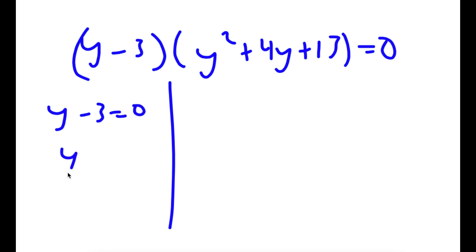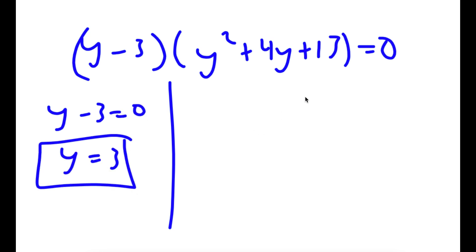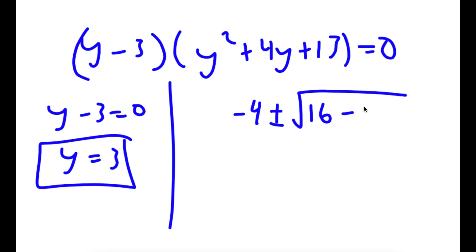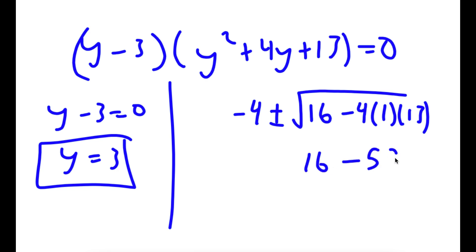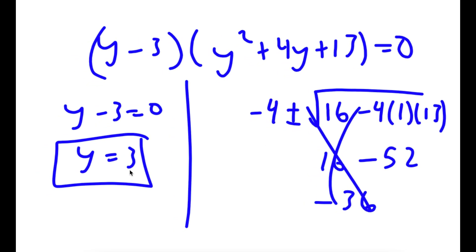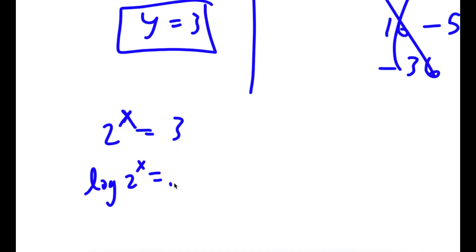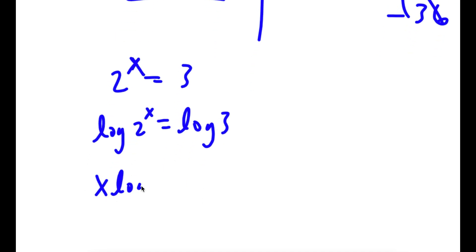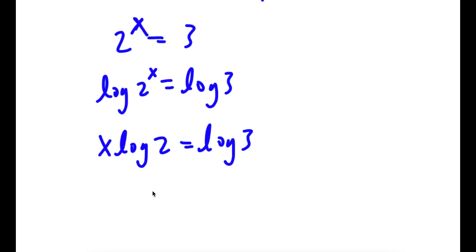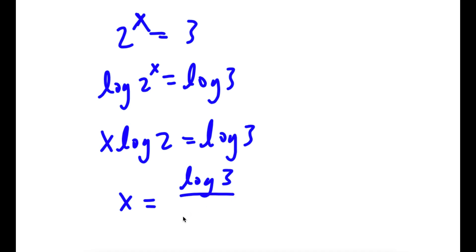This gives me two equations: y minus 3 equals 0, meaning y equals 3, and y squared plus 4y plus 13 equals 0. Using the quadratic formula, I get negative 4 plus or minus the square root of 4 squared minus 4 times 1 times 13, which is 16 minus 52, equaling negative 36. Since you can't take the square root of a negative number, the only solution is y equals 3. Since 2 to the power of x equals y, I have 2 to the power of x equals 3. Taking the log on both sides gives x times log 2 equals log 3, meaning x equals log 3 over log 2.